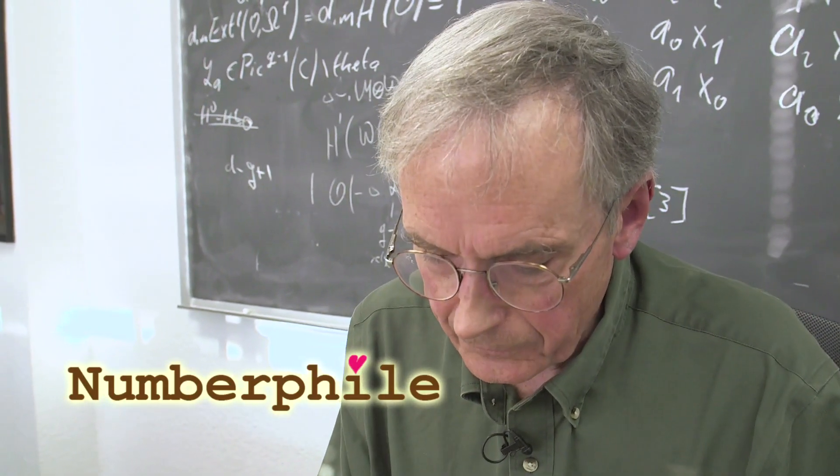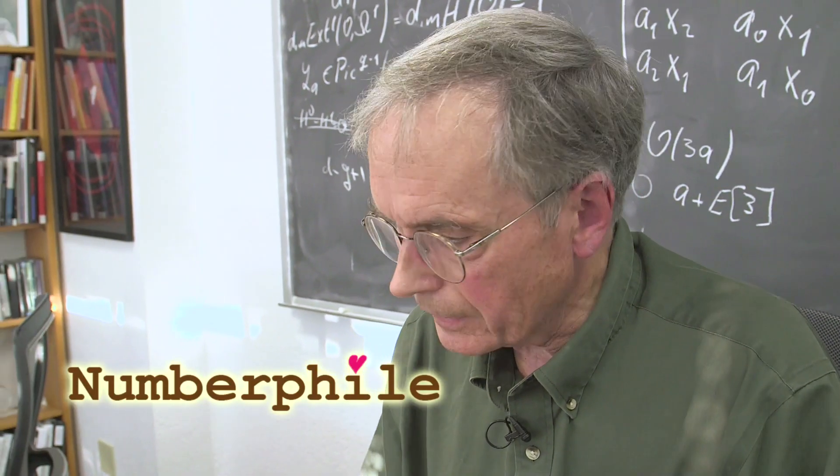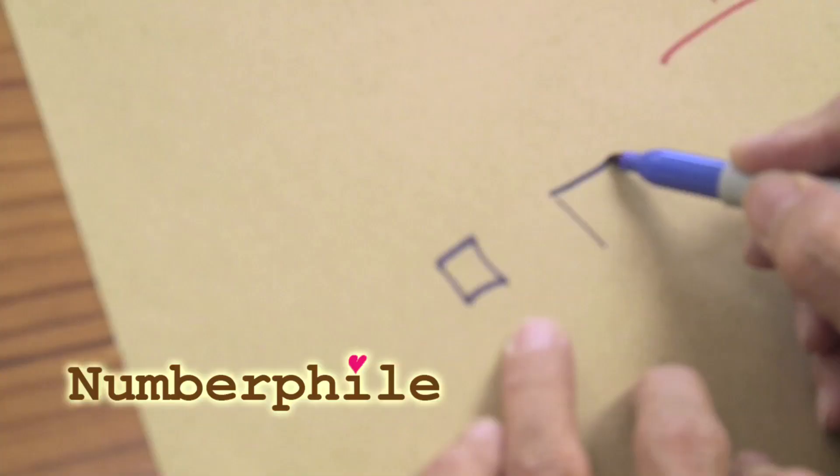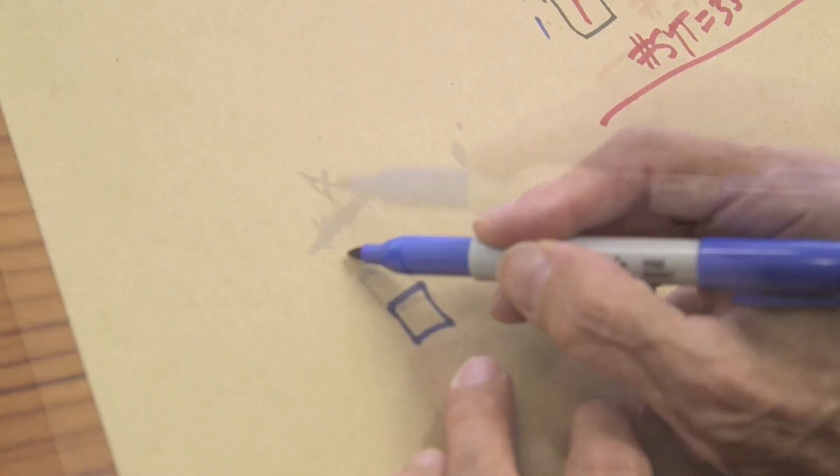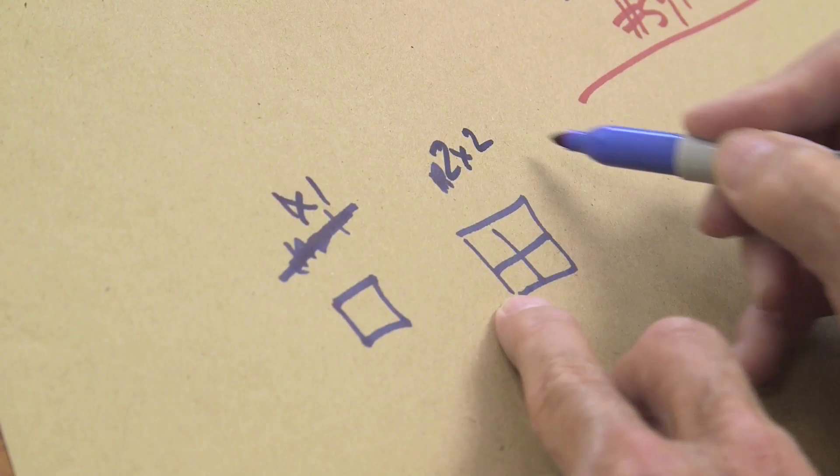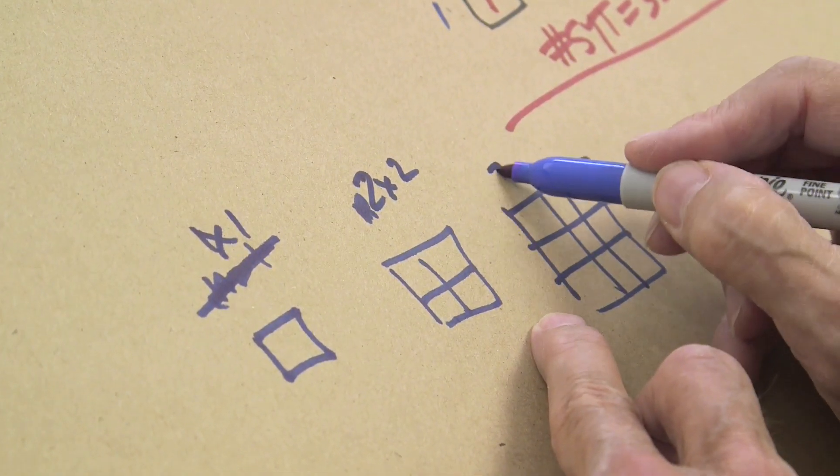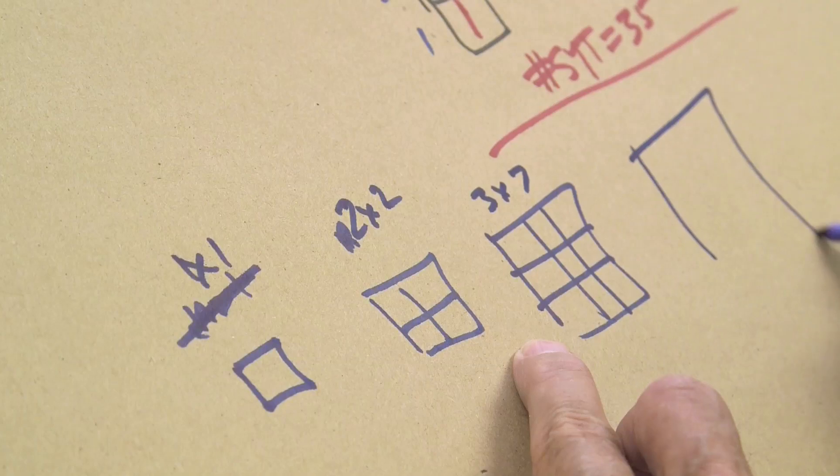It's interesting to look at some families of shapes in sequence and compute the number of standard tableaux for them. Let's look at squares.